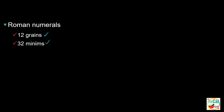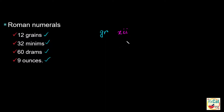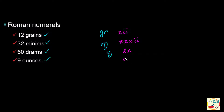Let's express the following using Roman numerals and appropriate symbols: 12 grains, 32 minims, 60 drams, 9 ounces. 12 grains: the symbol of grain is 'gr,' and 12 is written as 10 plus 2, which is XII. 32 minims: 32 is 10+10+10+10+2 (XXXII), and minim is the letter M with a curved tail. 60 drams: 60 is 50 plus 10 (LX), and the symbol of dram is edge. 9 ounces: 9 is written as 10 minus 1 (IX), and the symbol for ounce is edge with an extra cap above.